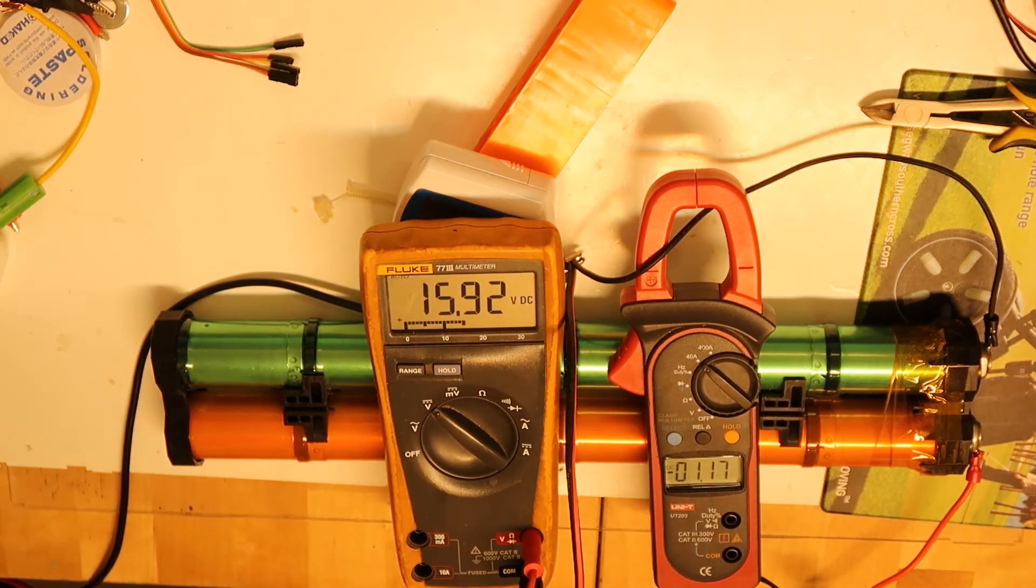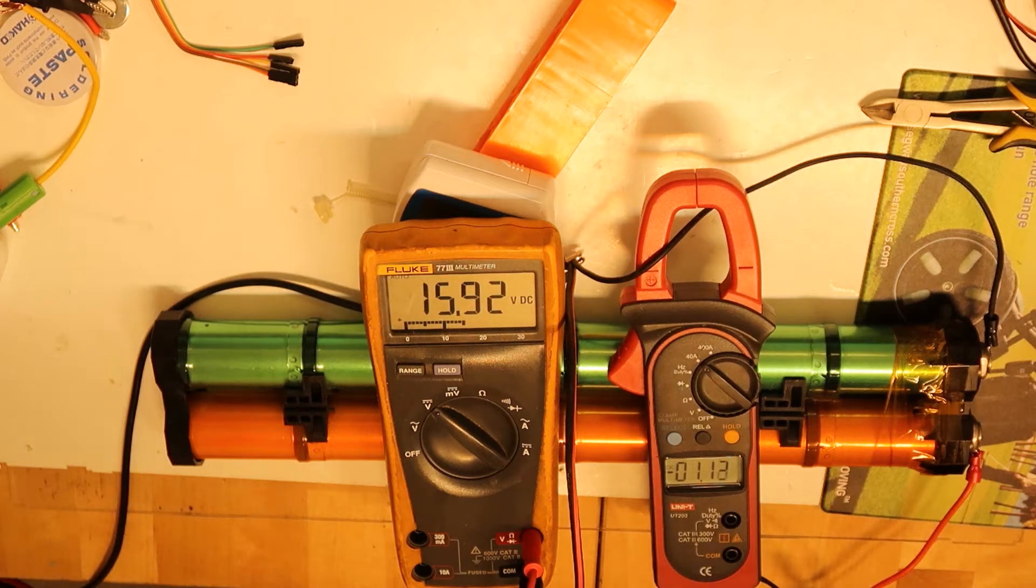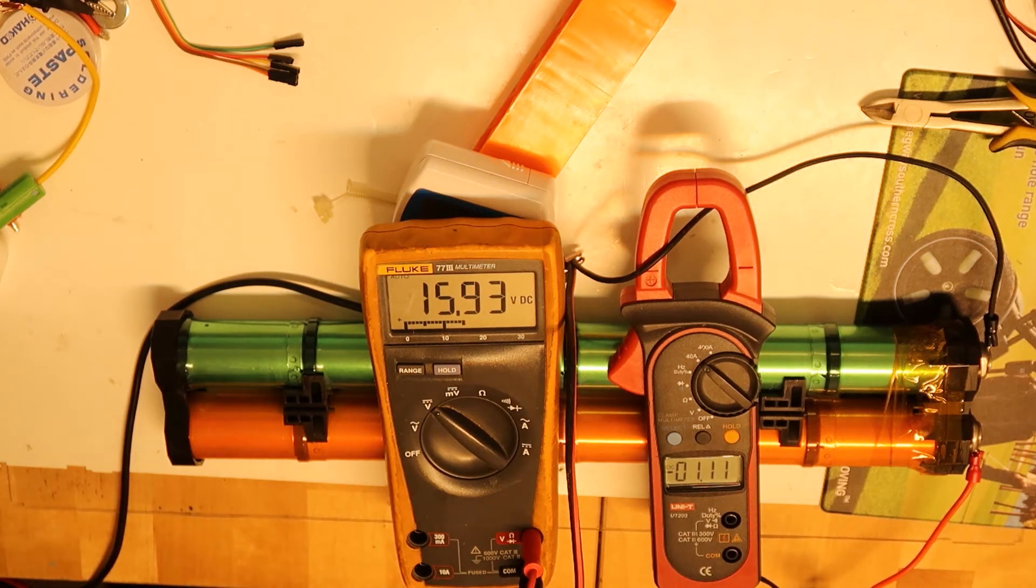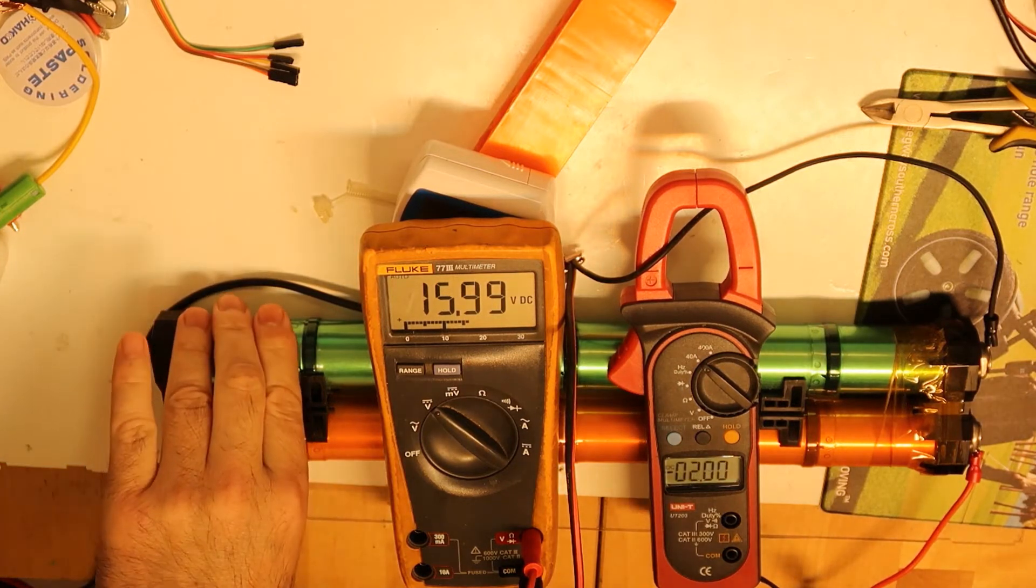I am charging now to 16 volts, maybe 2 amps, but it is close to 16 so the current is decreasing. So maybe I will charge to 17 volts. You can see now the current is up to 2 amps.